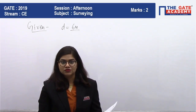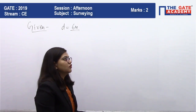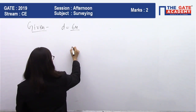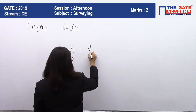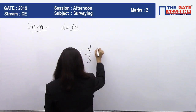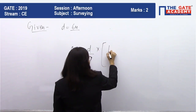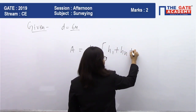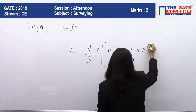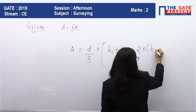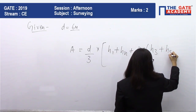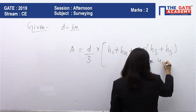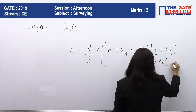We know the formula for Simpson's rule: A = (d/3) × [h₁ + hₙ + 2×(sum of odd-numbered offsets) + 4×(sum of even-numbered offsets)].